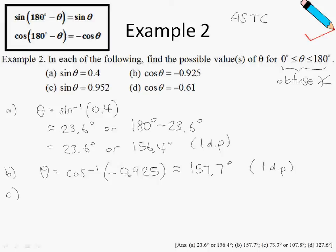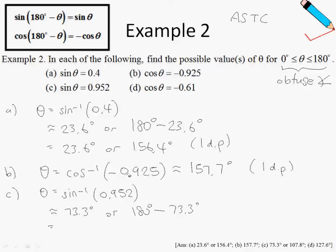For part C, we are again dealing with the sine function in the range 0 to 180 degrees, so we will have two answers. Theta equals sine inverse of 0.952, which rounds to 73.3 degrees or 180 minus 73.3, giving 73.3 or 107.8 degrees, to one decimal place.